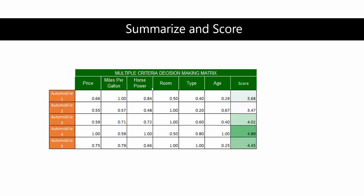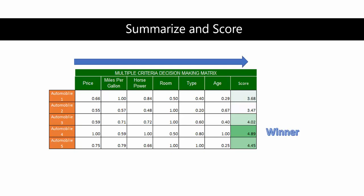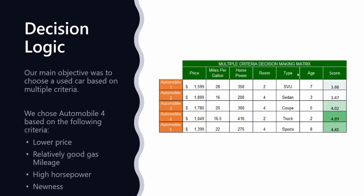We want to create a performance score. What we're doing is summing across the rows for each alternative to get a score. The winner is automobile four based on our normalized data. We can see these three variations are very close, but the winner is automobile four. The best thing to do is to put these scores back into the original matrix so we can see why we chose it.